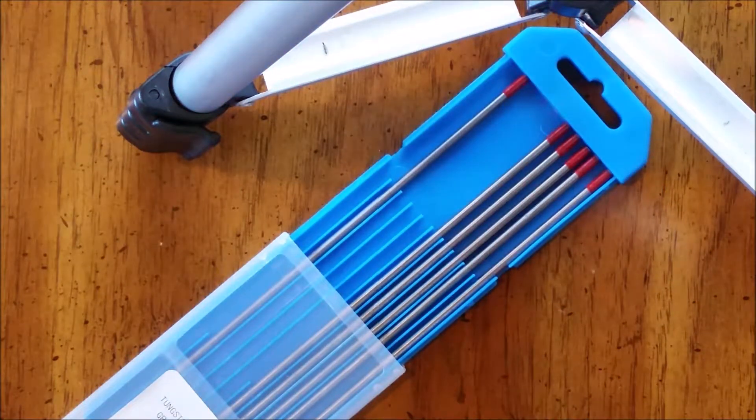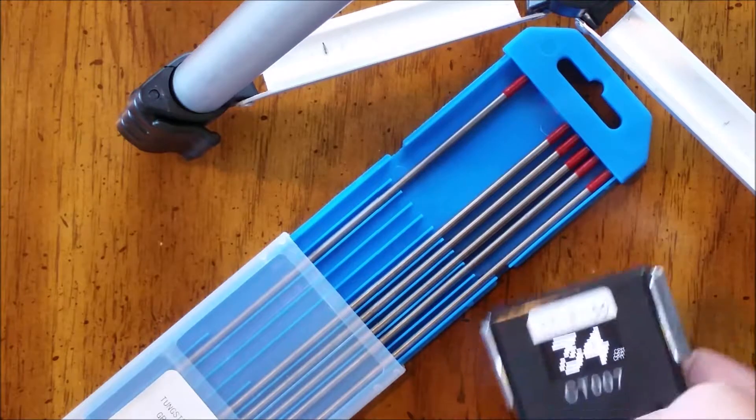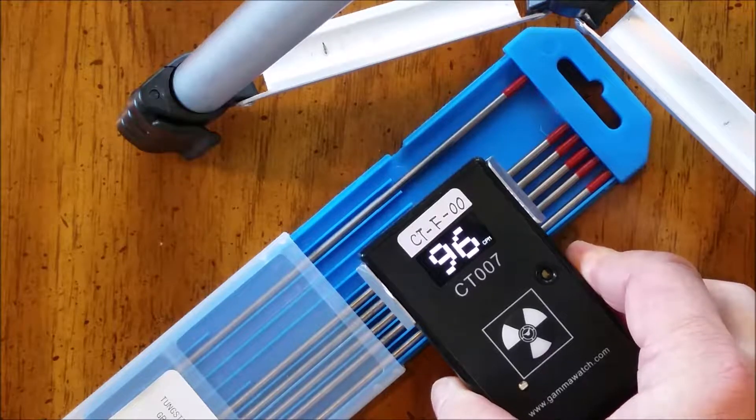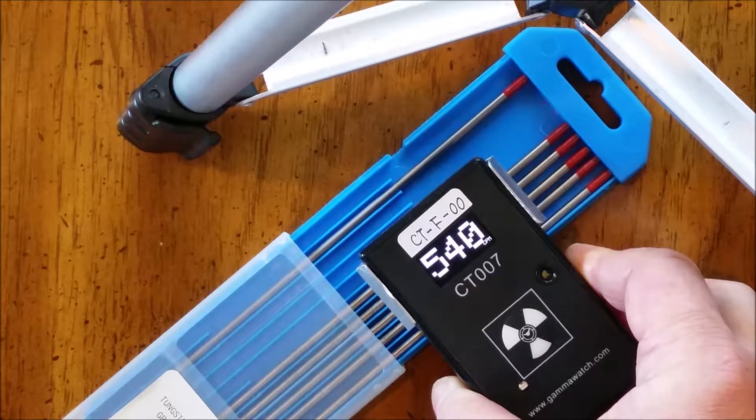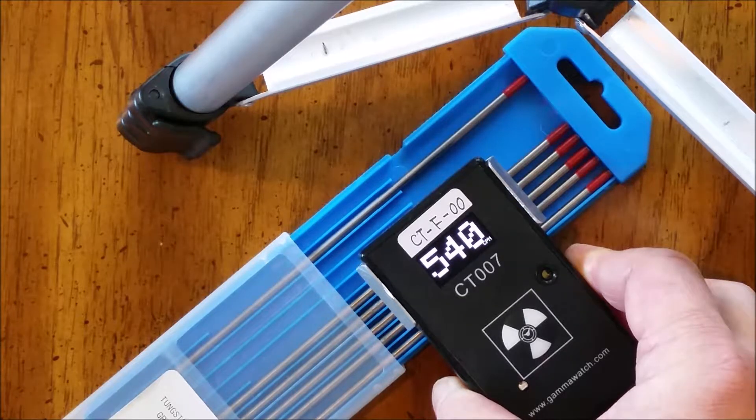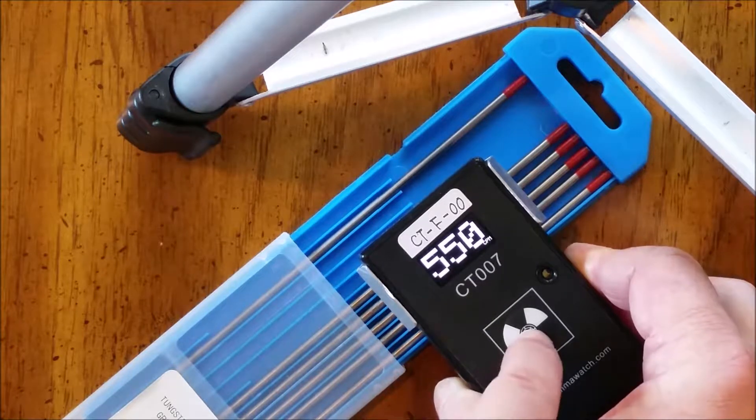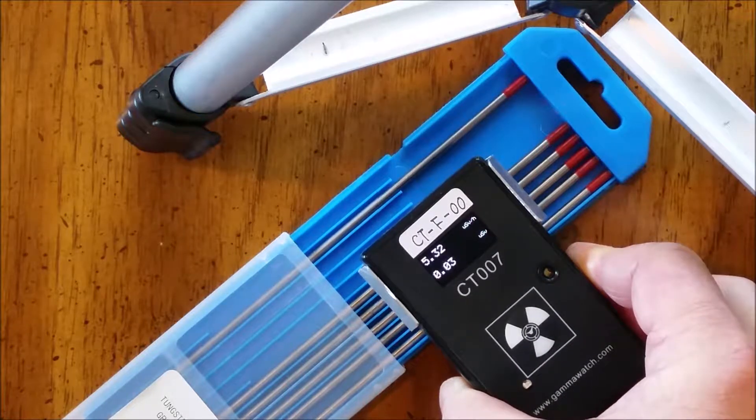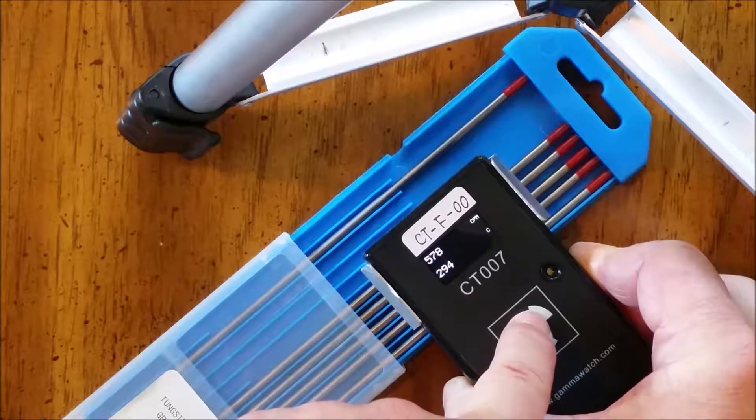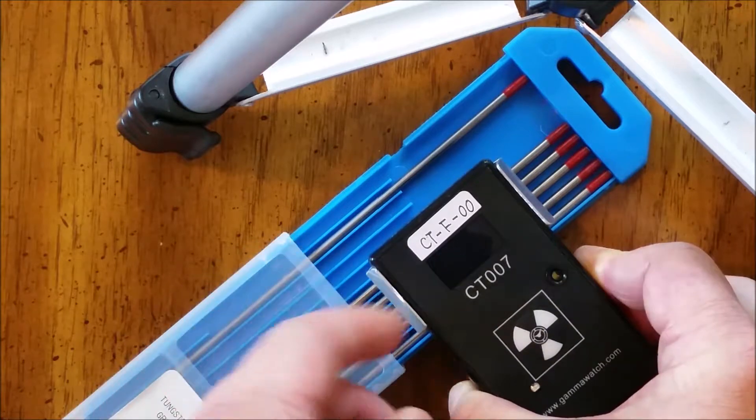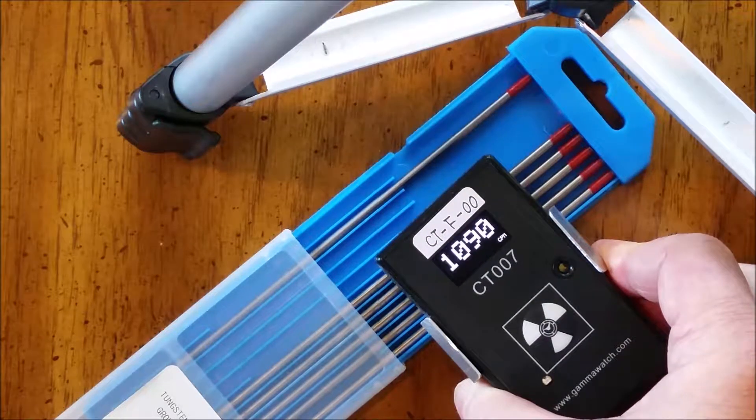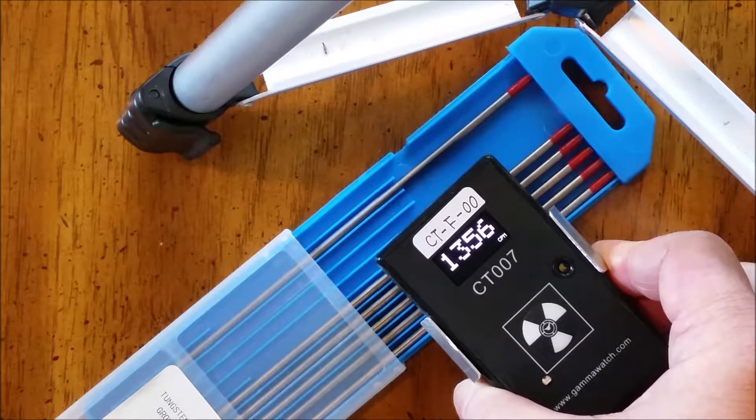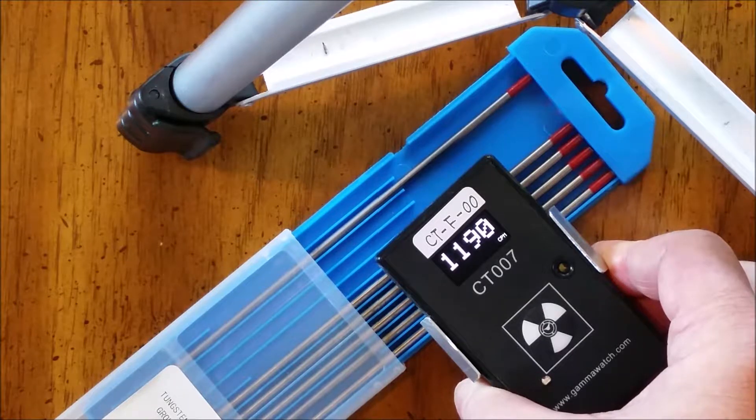So here we have some thoriated TIG electrodes, with the cover closed. We get around five or six hundred CPM or five or so microsieverts an hour. With the cover open we get around fourteen hundred, thirteen, fourteen hundred CPM.